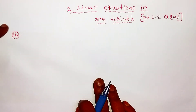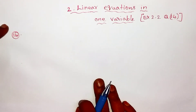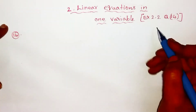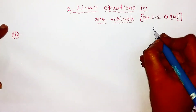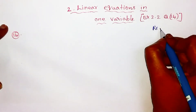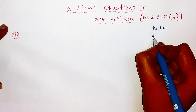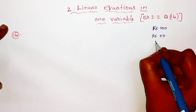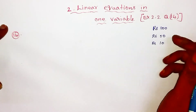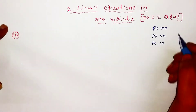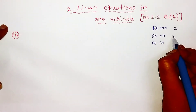Lakshmi is a bank cashier. She has currency notes of denominations 100 rupees, 50 rupees, and 10 rupees respectively. The ratio of the number of these notes is 2 is to 3 is to 5.